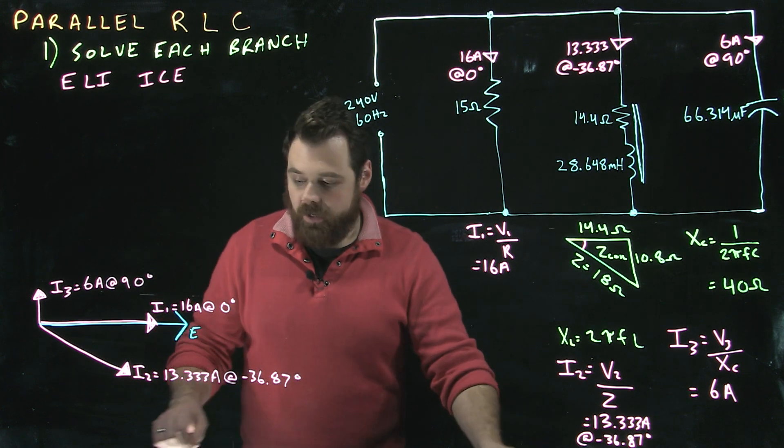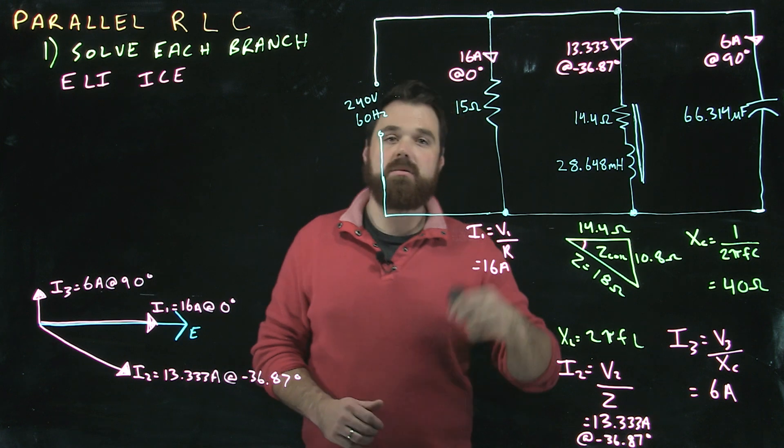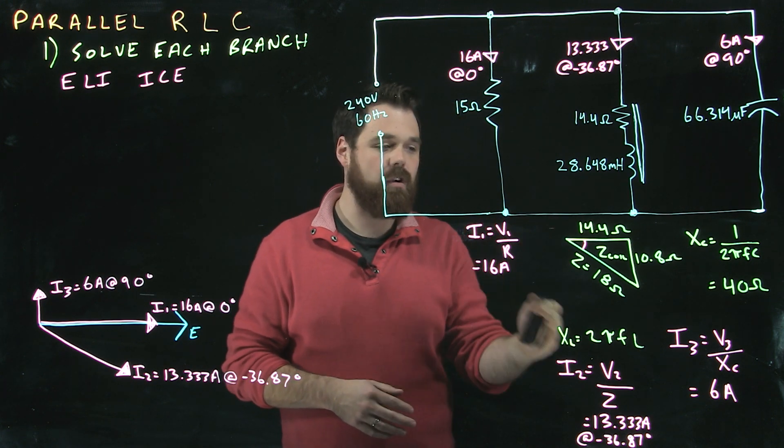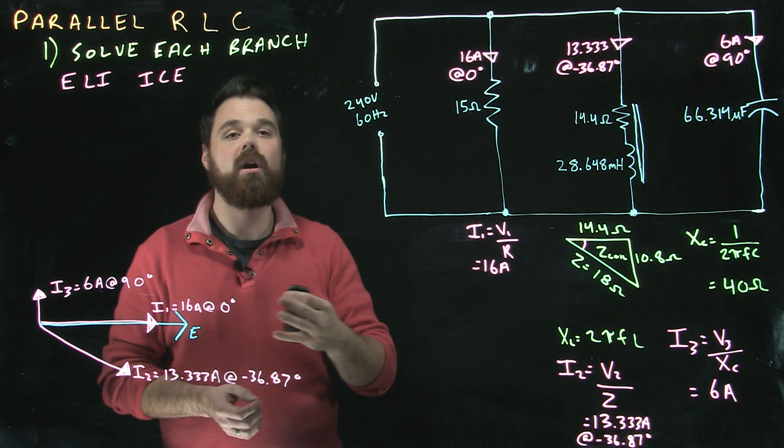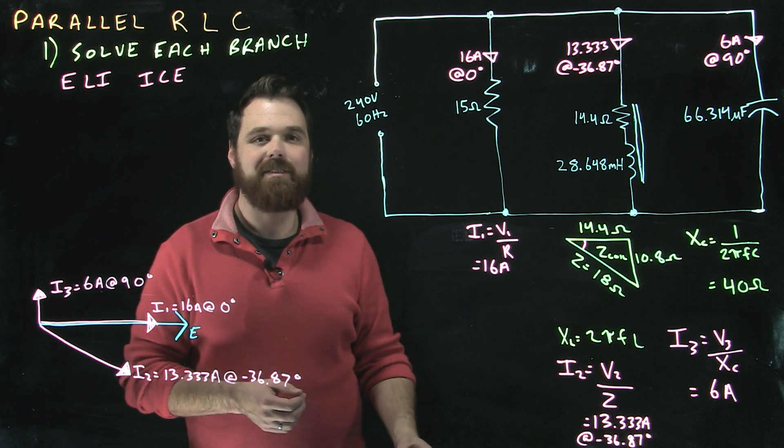So that's step one in our parallel RLC circuits: solve each individual branch using the opposition to current flow in that branch and the voltage in that branch to figure out the different current values. Thanks for watching. Remember to check out the next videos to solve current total for the circuit and power totals for the circuit.